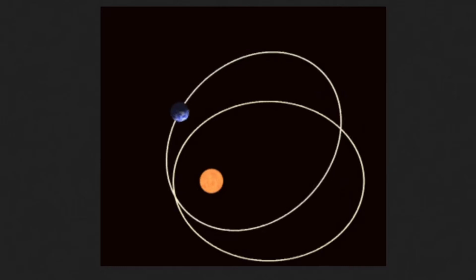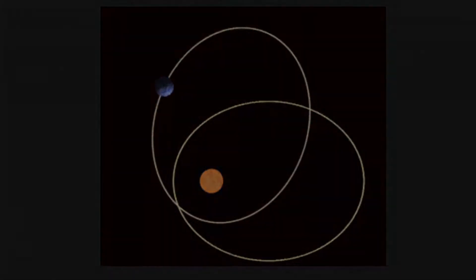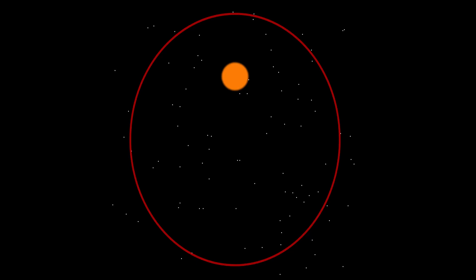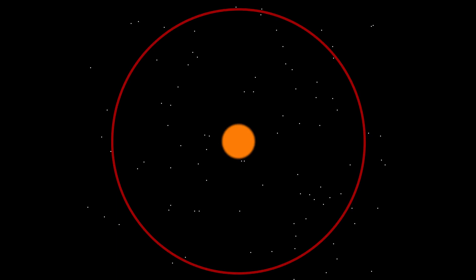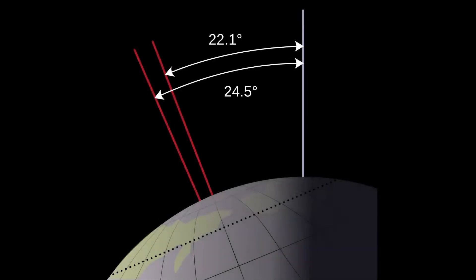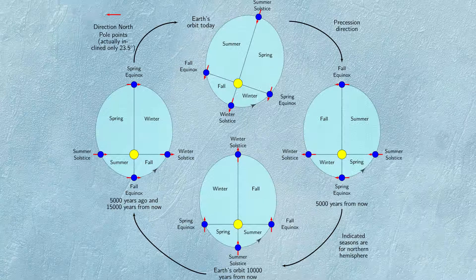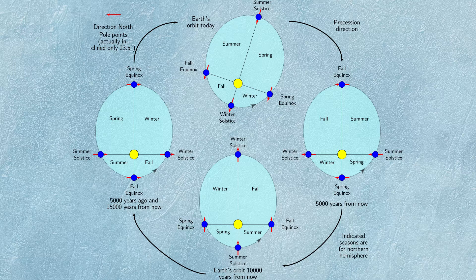There are three Milankovitch cycles. The first is the eccentricity — the shape of Earth's orbit — which fluctuates from more elliptical to more circular every 100,000 years. The second is the obliquity — the change in tilt of Earth's axis relative to the orbital plane — which fluctuates every 41,000 years. The third is the precession — the direction of the tilt of Earth's axis relative to distant stars — which fluctuates every 23,000 years and also alters the timing of seasons.